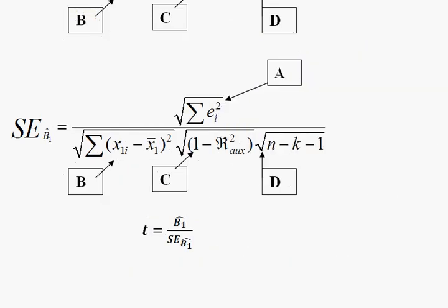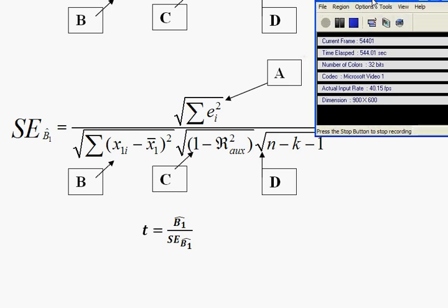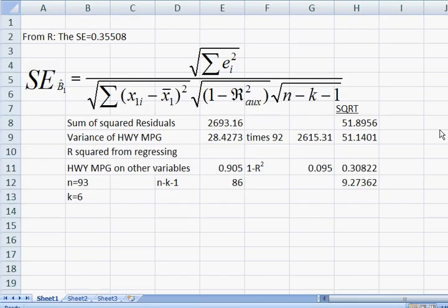I took the numbers that we looked at a minute ago. Let me walk you through these real quickly. Here's the sum of squared residuals. But in the formula, we need the square root of those. So, that's 51.8956. On the bottom, we found out that the variance of highway miles per gallon is 28.4273. But this is not the variance. This is the variance before it's divided by n minus 1. So, we need to multiply it by n minus 1, 92 in this case, to get 2615. And then you see that it's under the square root also. So, that's 51. Then we need that R squared, which is 0.905. In the formula, it's 1 minus R squared, which is 0.095. And then the square root, which is 0.308. And then we need the square root of n minus k minus 1, 86 degrees of freedom. The square root of that is 9.27.